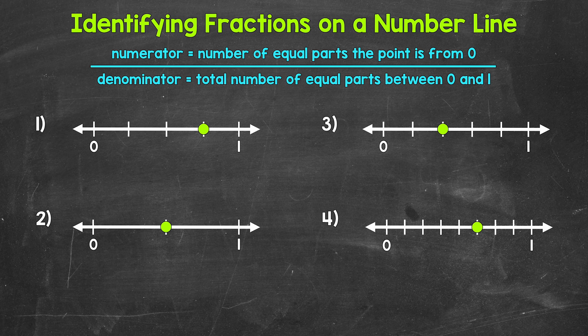Notice we have zero and one here, so a distance from zero to one. We can think about this like one whole, and we can see that the green point marking our fraction is in between zero and one. So we don't quite have one — we have part of that distance, part of that whole. This is going to be a fraction. The first thing we need to do is see how many equal parts, equal lengths, the distance between zero and one has been divided into.